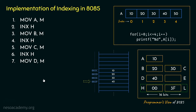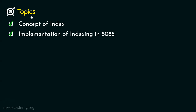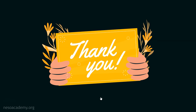So clearly, although we don't have a dedicated index register in 8085, we can still perform the implementation of indexing in this microprocessor. In this session, we covered the concept of index and then learned about the implementation of indexing in the 8085 microprocessor. In the next session, we are going to learn about the flag or status register. I hope to see you in the next one — thank you all for watching.